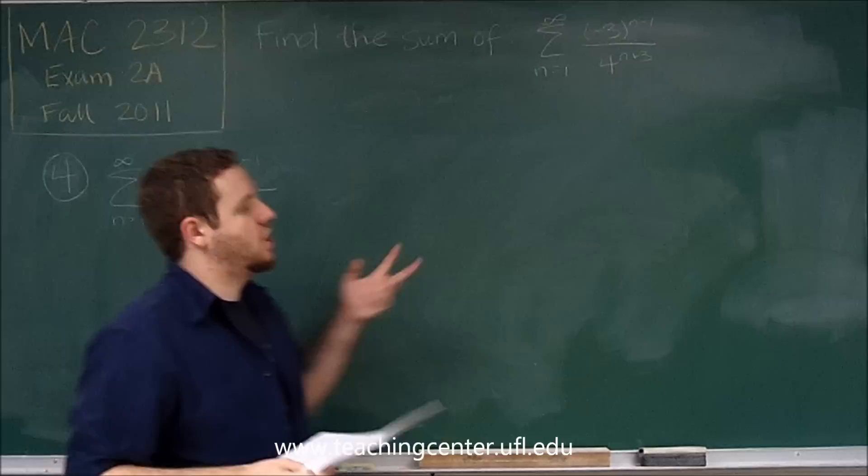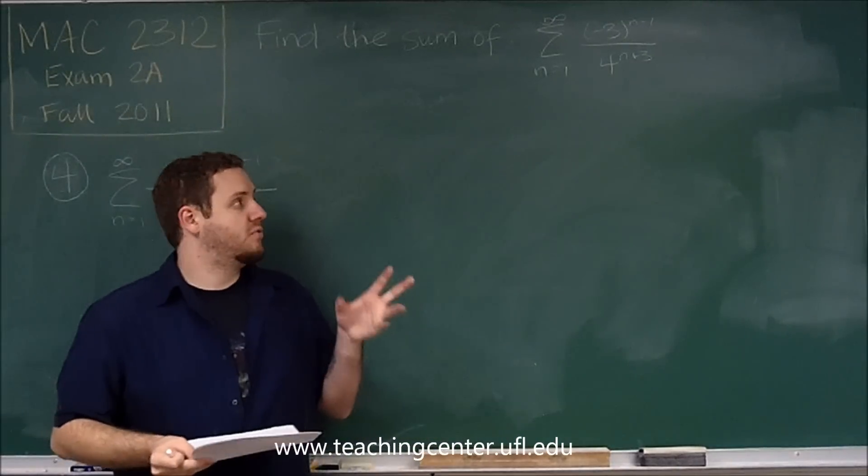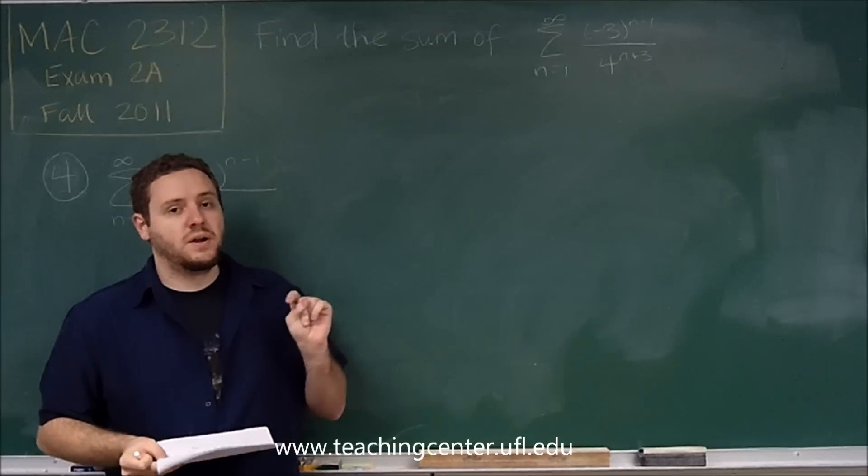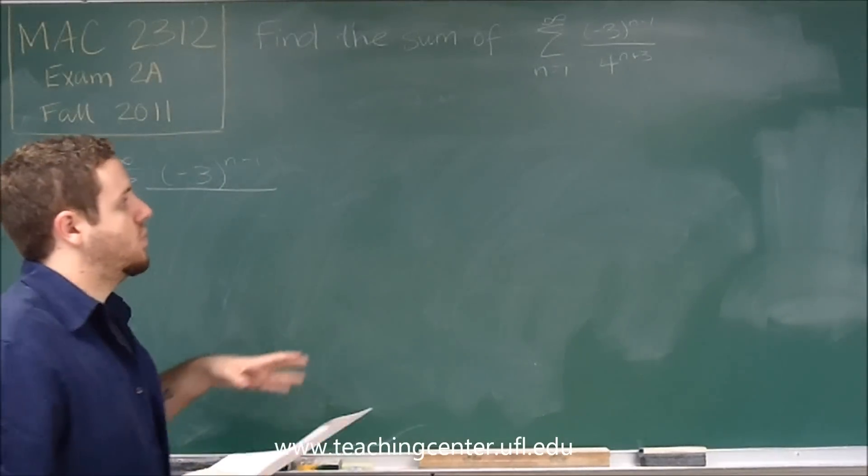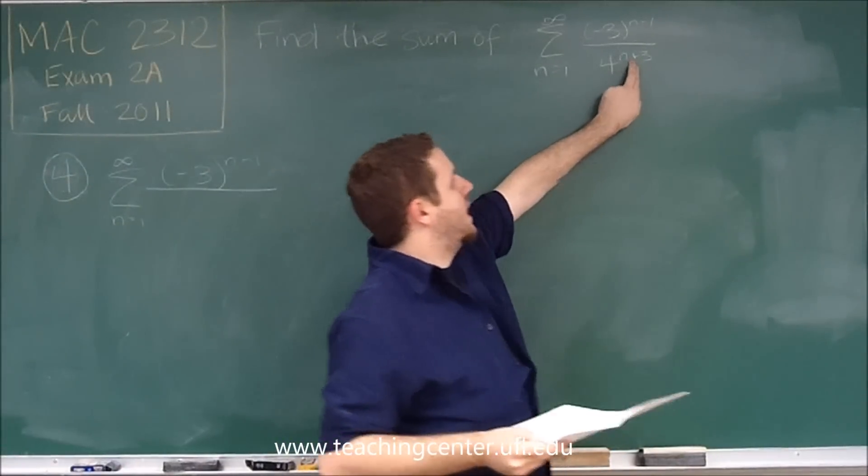But on the denominator, we need to turn that power of four, or the exponent on the four, into n minus one. So what this is, is this is four more exponents.